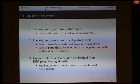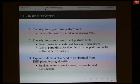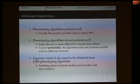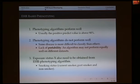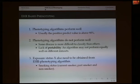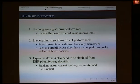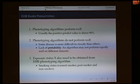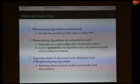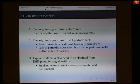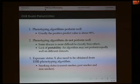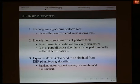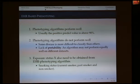For EHR-based phenotyping, some algorithms perform very well with a positive predictive value above 90%. However, some algorithms do not perform well because certain diseases are more difficult to classify — for example, rheumatoid arthritis is more difficult to classify compared to type 2 diabetes — or due to lack of data. Moreover, there are situations where the exposure status X in the association study also needs to be obtained from an EHR algorithm, such as smoking status. We are interested in whether, across all these situations, we can ignore misclassification and treat the EHR-derived phenotype as the true disease status.